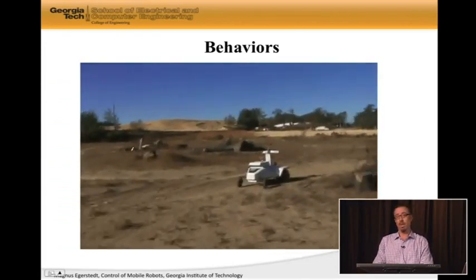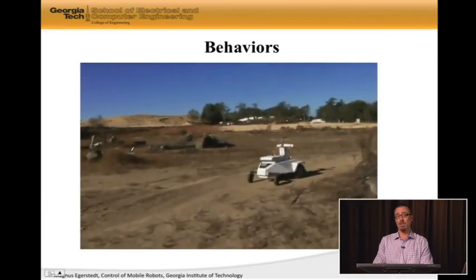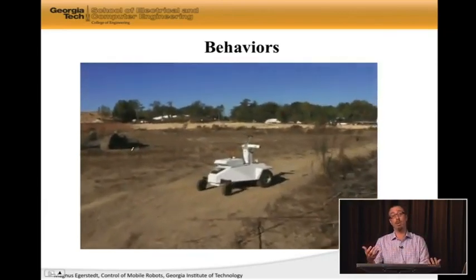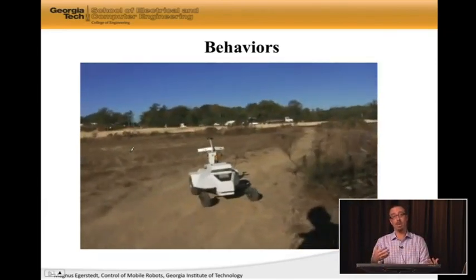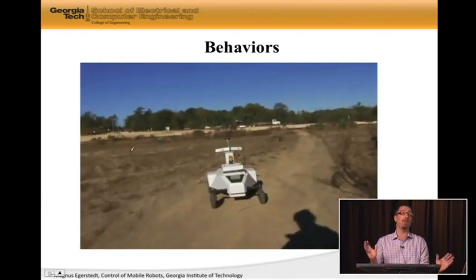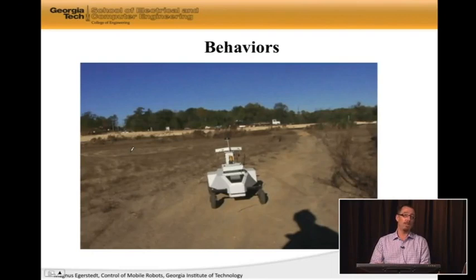So now, the same thing shows up to the robot. Instead of the robot sitting around, thinking for a long time, it just avoids it. And once it's clear, it goes back to following the plan. So this would be an example of why behaviors are really useful.